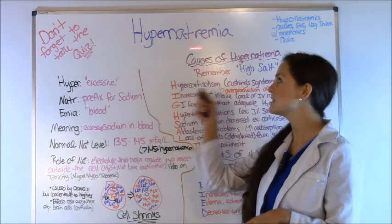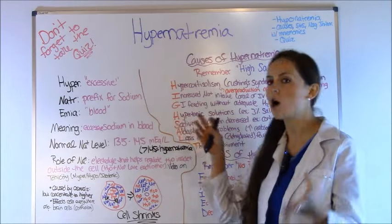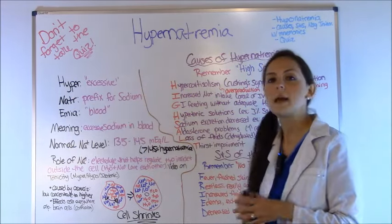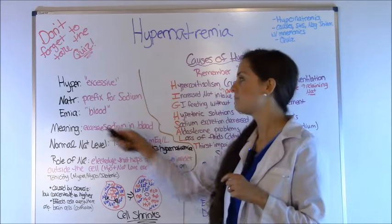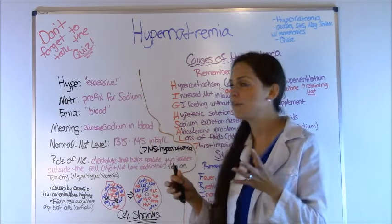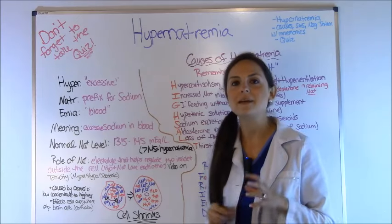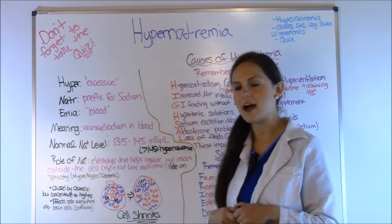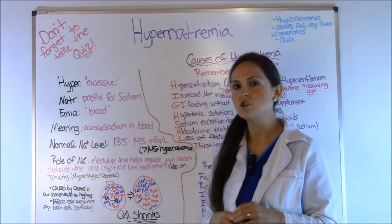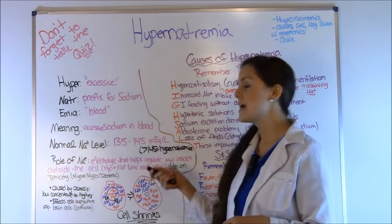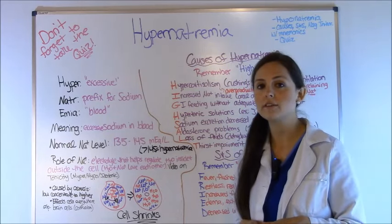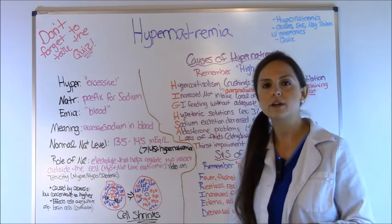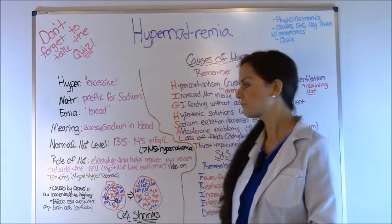Let's break this word down, because anytime you have one of these big words, always try to break it down so you know what electrolyte you're dealing with. Hyper, the first part of it, means excessive. N-A-T-R is the prefix for sodium, and emia means blood. So when you put all that together, you get excessive sodium in the blood. A normal sodium level is 135 to 145 milliequivalents per liter, and anything over 145 is considered hypernatremic.